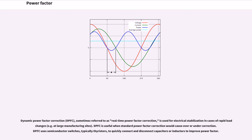Dynamic power factor correction, sometimes referred to as real-time power factor correction, is used for electrical stabilization in cases of rapid load changes. DPFC is useful when standard power factor correction would cause over or under correction. DPFC uses semiconductor switches, typically thyristors, to quickly connect and disconnect capacitors or inductors to improve power factor.